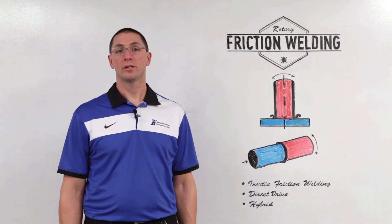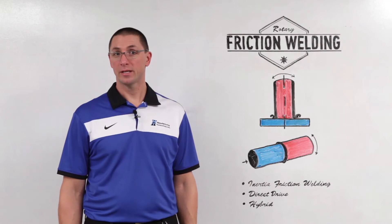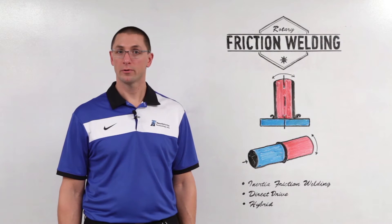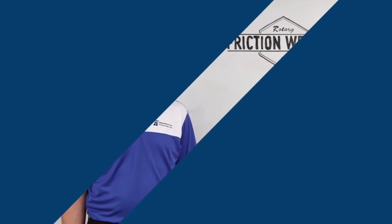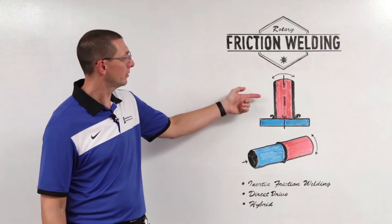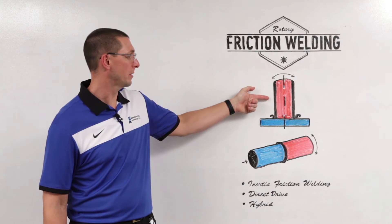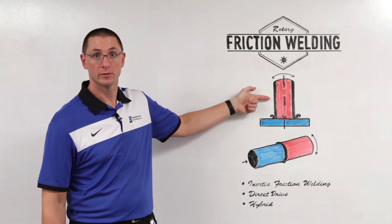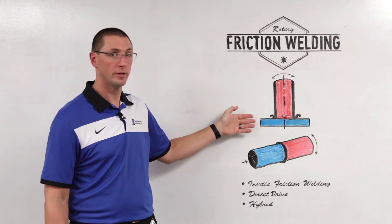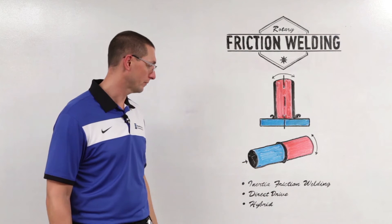Thanks for joining me for MTI's Whiteboard Wednesdays. I'm Dan Adams. Today we're going to be talking about rotary friction welding. Rotary friction welding is used when you have one component that can be rotated or symmetric about its rotary axis, welded to another part that does not necessarily need to be symmetric.